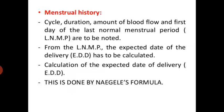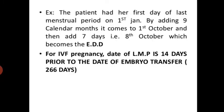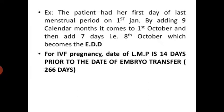Calculation of expected date of delivery (EDD): this is done by Naegele's formula. Naegele's formula calculates the EDD by adding 9 months and 7 days to the first day of the last normal menstrual cycle. For IVF pregnancy, the date of LMP is 14 days prior to the date of embryo transfer, equivalent to 266 days.